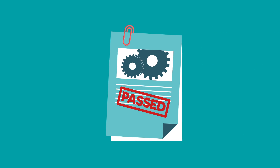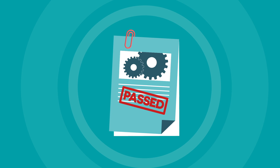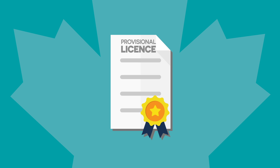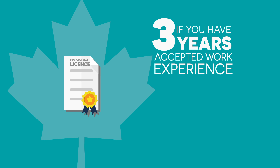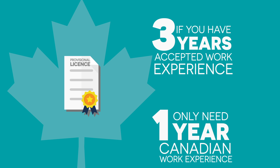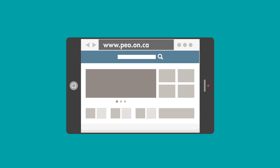Please note that after you've passed the PPE, if you still require a year of Canadian work experience, you can apply for a provisional license with PEO. You can get a provisional license if you've got three years of accepted work experience and are only in need of the one year of Canadian work experience. You can read more about the PEO licensing process on the PEO website at peo.on.ca — also take a look at their Engineering Intern Program while you're there.